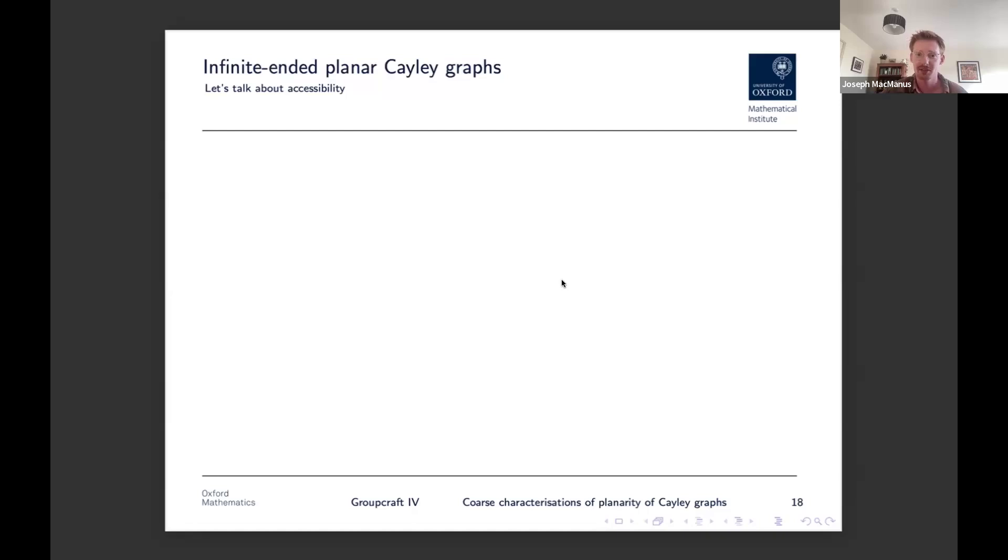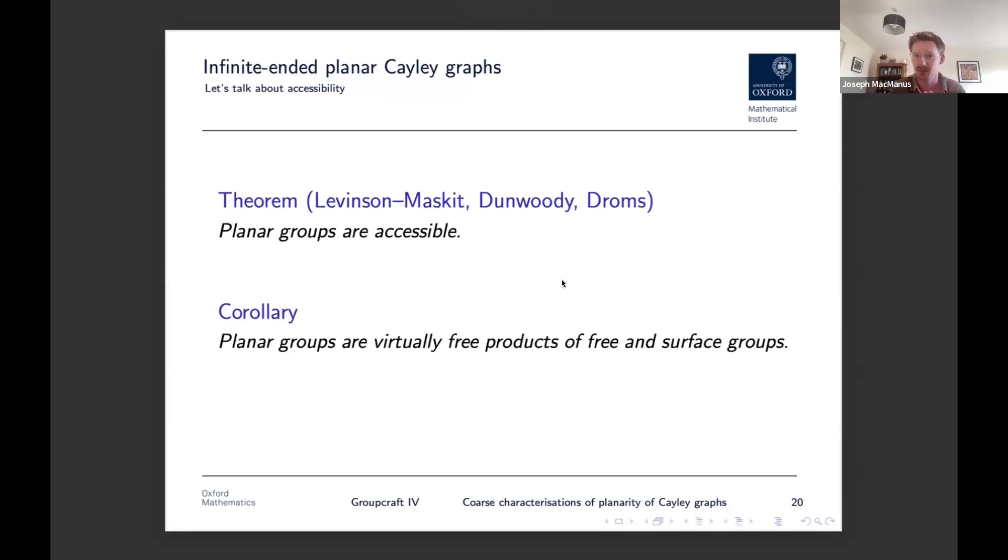And if you aren't really comfortable with graphs of groups, don't worry about it. All I really want you to think about is this main takeaway, which is that if you have a class of groups that you're studying, and you understand the one-ended groups, and you understand that this class of groups is accessible, then essentially any problem in this class of groups, structural problem, tends to reduce quite nicely to the one-ended case. You don't have to do much work to take the one-ended case and consider bigger groups. If you don't do this, then you run into problems of inaccessible groups, and it's a bit of a nightmare, but we don't need to talk about those. So, with that in mind, what about the infinite-ended planar Cayley graphs?